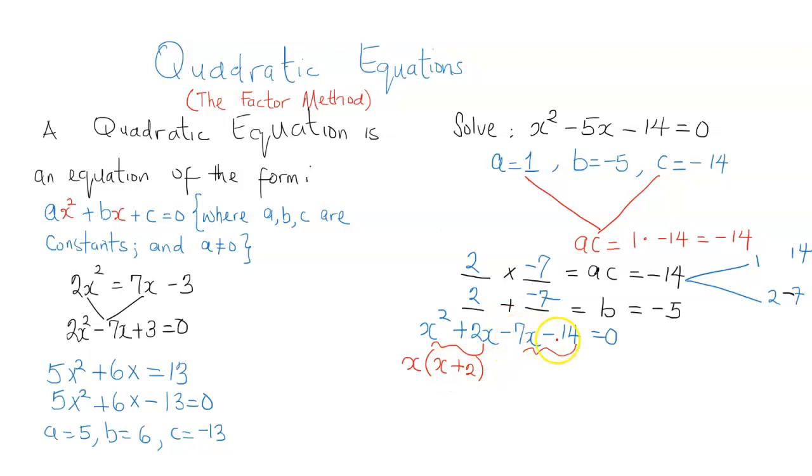Now we can see that negative is common to both negative 7x and negative 14. So I'm going to bring out a negative. Now we've got 7 and 14. 7 is common. x is not beside 14, so x is not common.